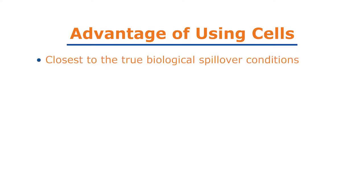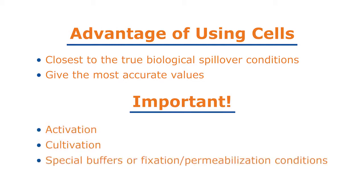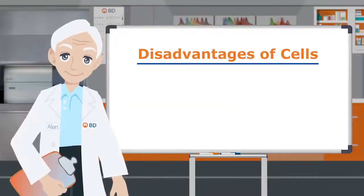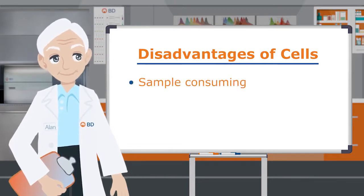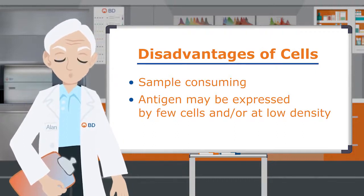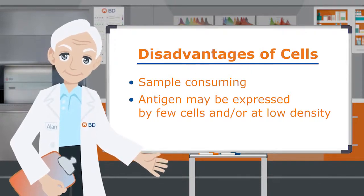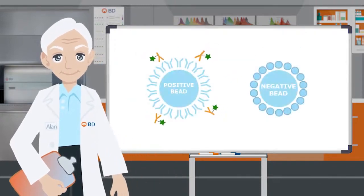The advantage of using cells is that this is the closest to the true biological spillover conditions and will give the most accurate values. When using cells, it is important to run the compensation controls under the exact same conditions as your experiment, including activation, cultivation, suitable buffers, or fixation permeabilization conditions. The disadvantage of using cells is that you may have to use precious biological samples. Also, there may be very few positive cells expressing the antigen, but the antigen density may be very low. In both cases, it can be hard to accurately measure the spillover value.